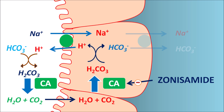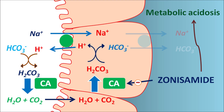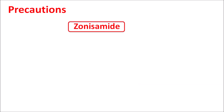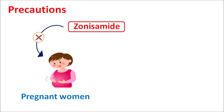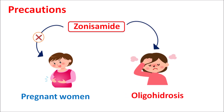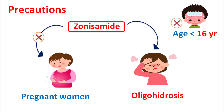As a result, bicarbonate is more excreted in the urine, which increases the acidic levels within the systemic circulation. In this way, zonisamide can produce metabolic acidosis — similar to drugs like acetazolamide. Therefore, along with zonisamide, any other drugs that increase acidosis should not be combined. Similarly, zonisamide is a teratogenic agent, so it should not be given to pregnant women. This drug can also increase oligohydrosis, resulting in decreased sweating and increased body temperature, which is why it should not be given to children aged less than 16 years due to the risk of hyperthermia.